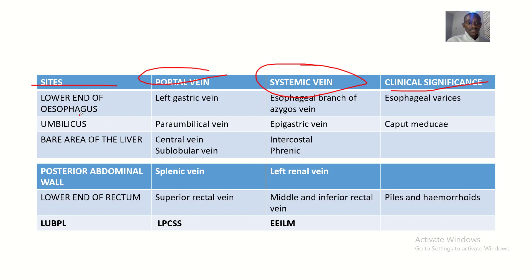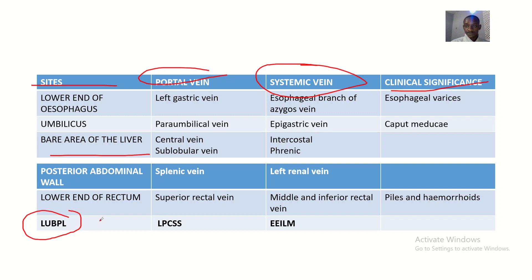The sites are: lower end of esophagus, umbilical, bare area of liver, posterior abdominal wall, and lower end of rectum. The mnemonic to remember the sites is LUBPL — L is lower end of esophagus, U is umbilical, B is bare area of liver, P is posterior abdominal wall, and L is lower end of rectum.